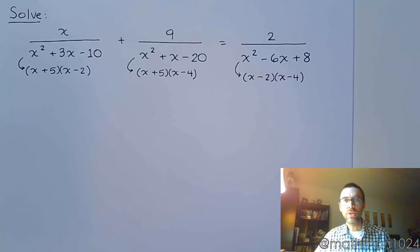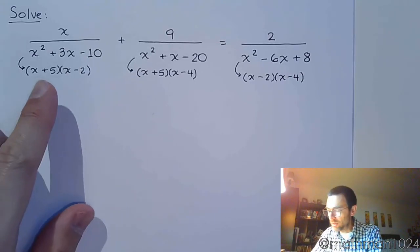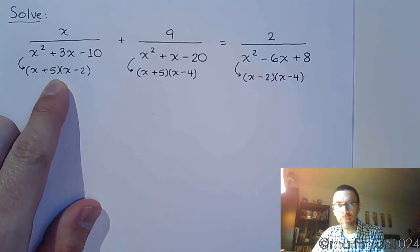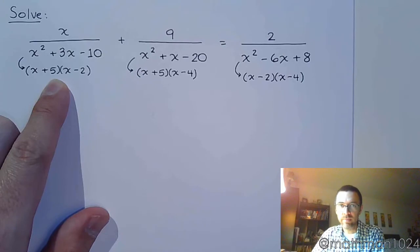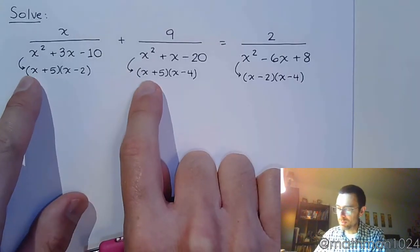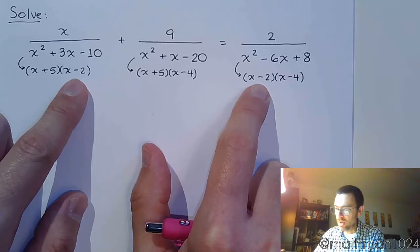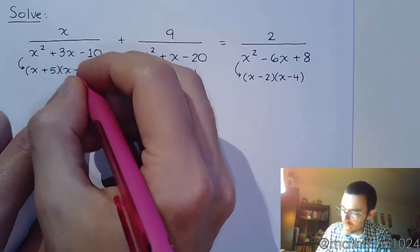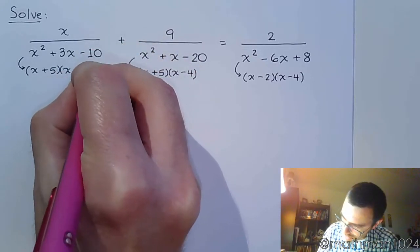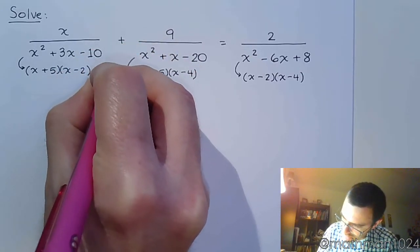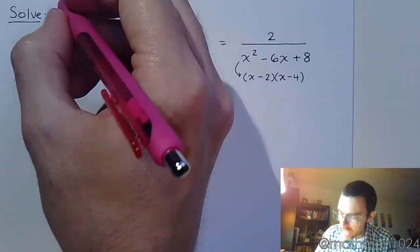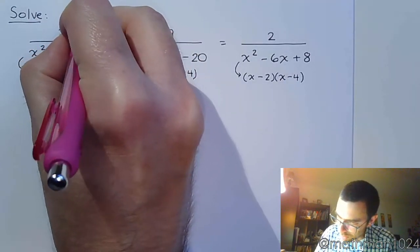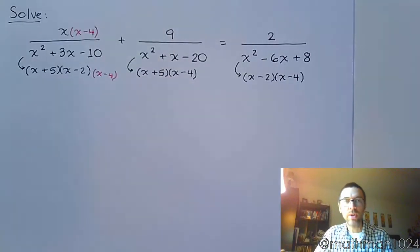So the next thing we do is that we take our different colored pen or pencil and we put in those factors that are missing. So if I look here, what does everybody else have that he doesn't have? Well, this guy has the x plus 5, and this one has the x minus 2. But these guys both contain x minus 4, so that's what's missing. So I'm going to put in the factor x minus 4. And, as we saw in the previous example, I need to put that in the numerator as well.